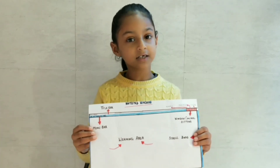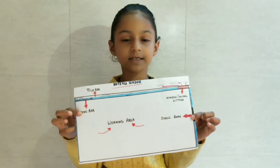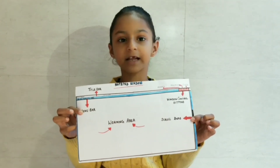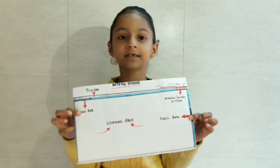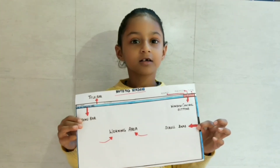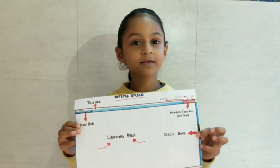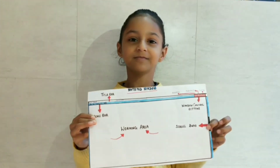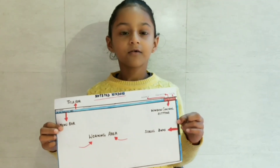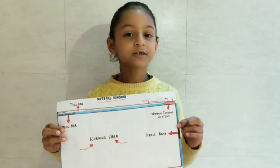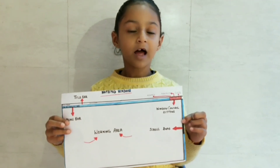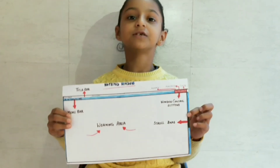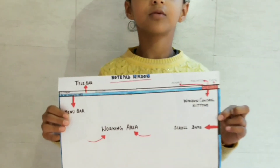Third, menu bar. This helps to do different things. Fourth, working area. Fifth, scroll bar. It helps to move the page.